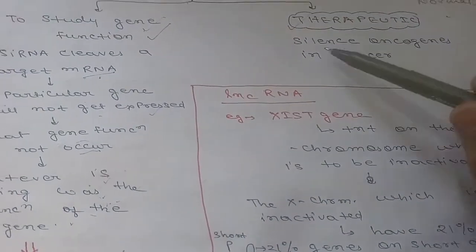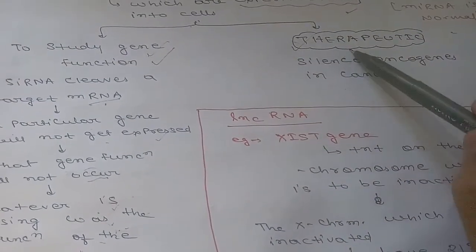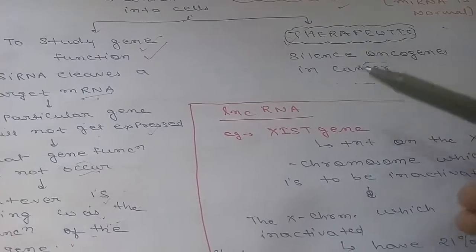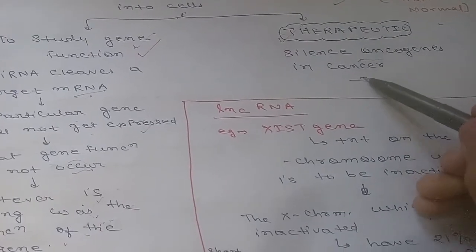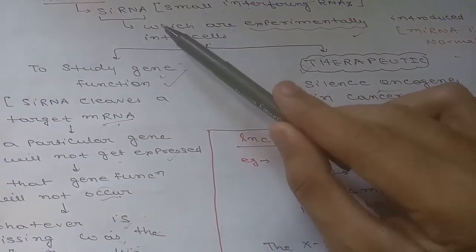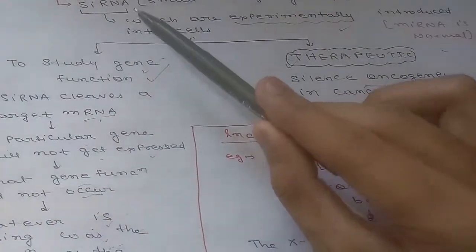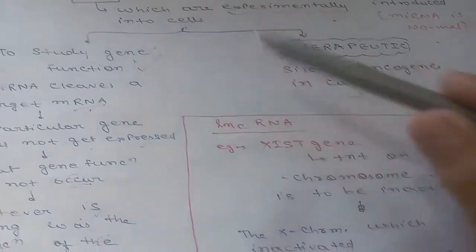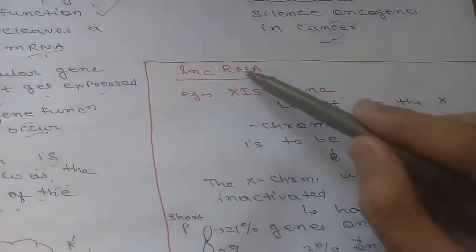The second use of siRNA is therapeutic: we can silence certain oncogenes in cancer. These are the two main uses of siRNA, which functions in the same way as miRNA.